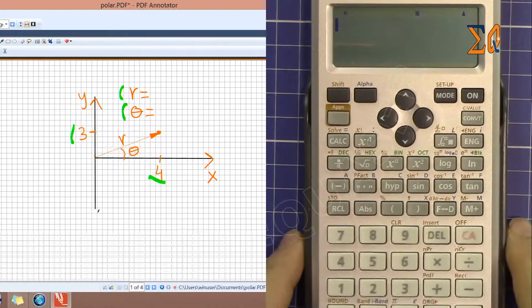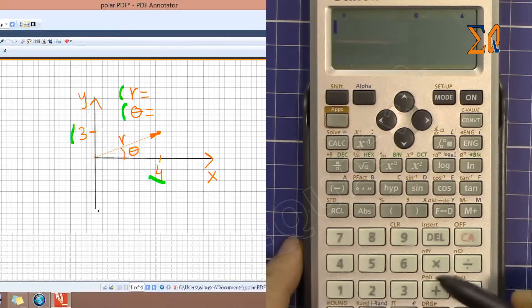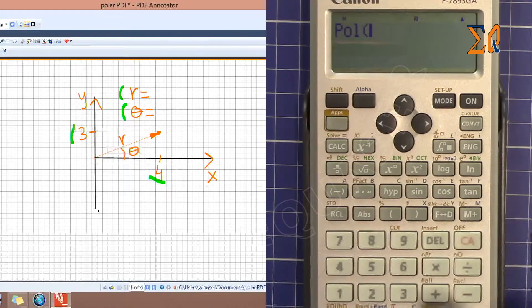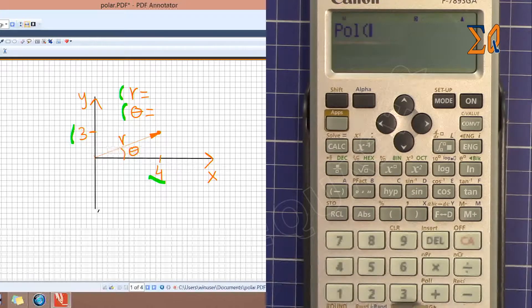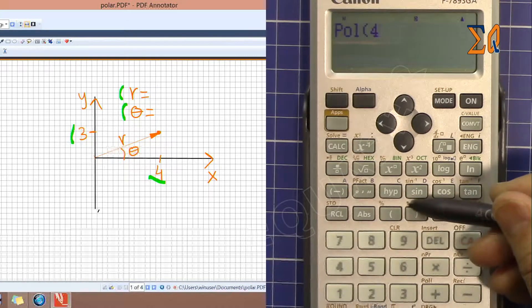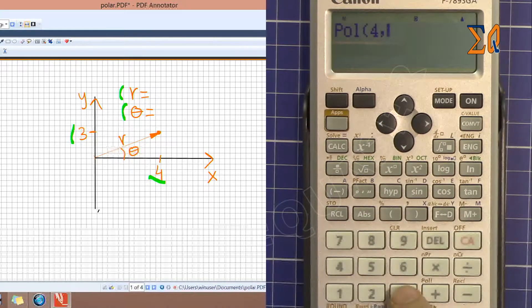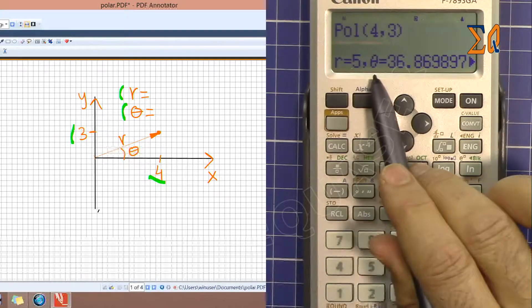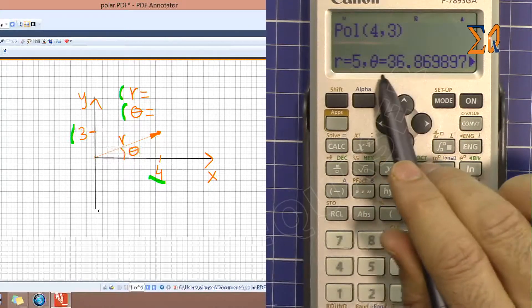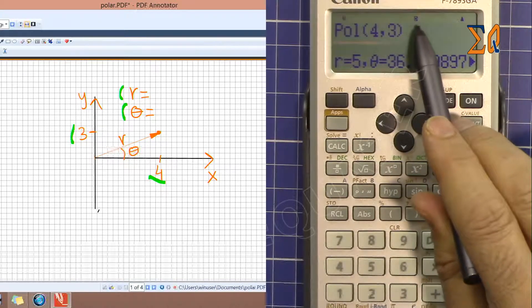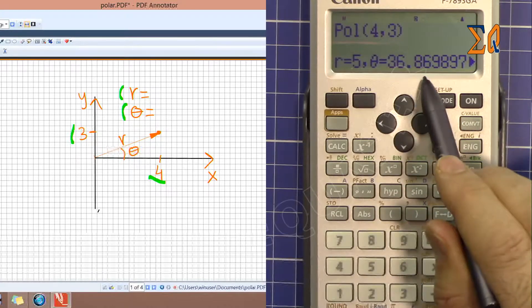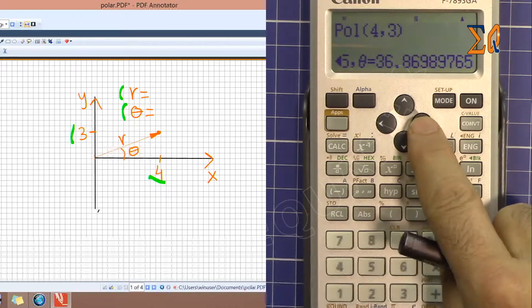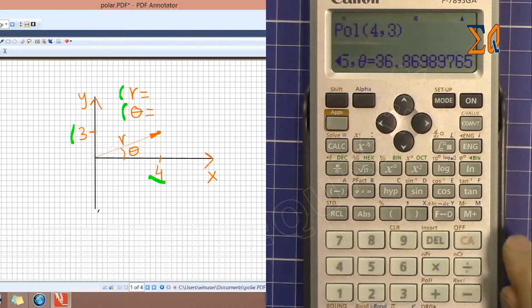This is the button that we will use. You see here POL, so I'm pressing shift and then pull. You see pull on the screen, and then first enter X, 4, and then we use this comma which is used with shift, and then 3, then close it and press equal sign. Now it shows R is equal 5 and theta is 36.8. This is a degree and it's directly dependent on this. If this is radian you will get a radian unit. So make sure to see the full value we can go to the left.